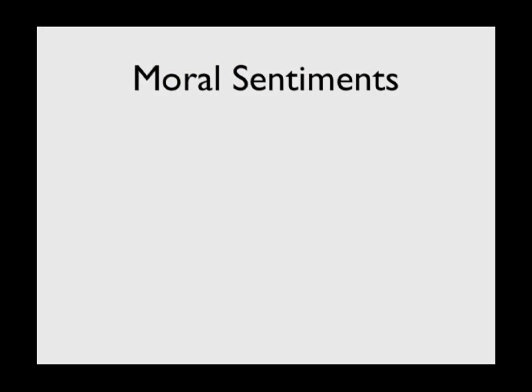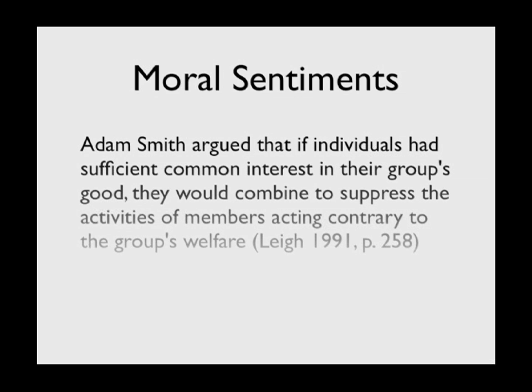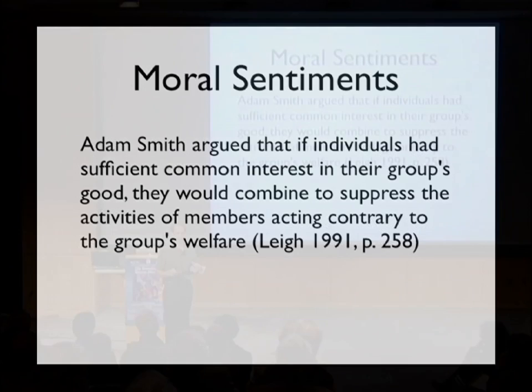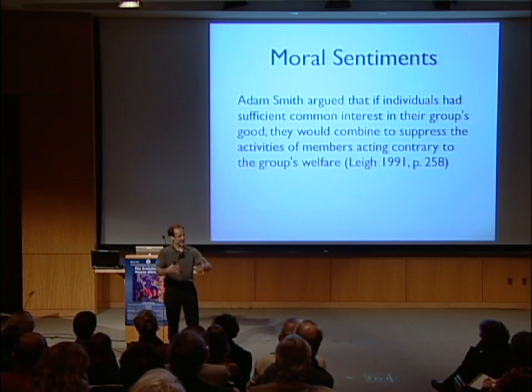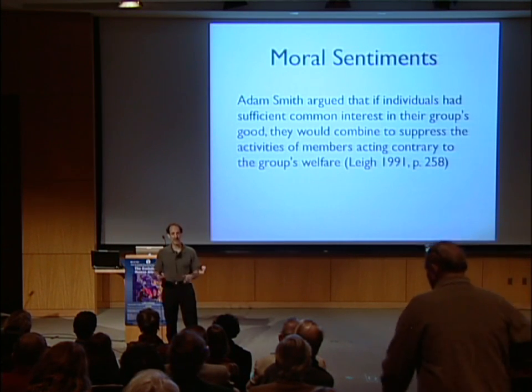Adam Smith didn't believe that, or certainly wrote against it. He wrote a second book, not as famous but quite well known, called Moral Sentiments. Egbert Lee, writing about Adam Smith, said: Adam Smith argued that if individuals had sufficient common interest in their group's good, they would combine to suppress activities of members acting contrary to the group's welfare. So individuals in a human group, if they can see that there are problems, can band together to suppress that internal competition — and that's going to promote the group welfare.